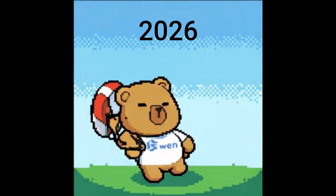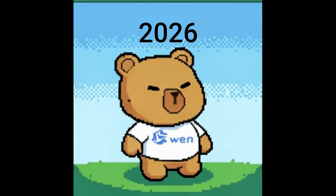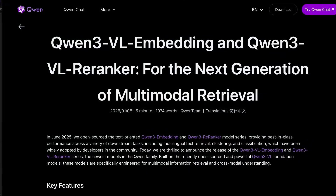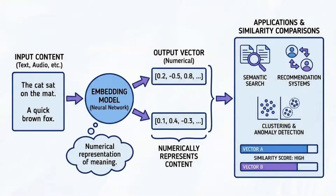The first models from Qwen for 2026 have dropped — these are the Qwen 3 VL embedding models. The cool thing about these is that they are multimodal embedding models, meaning they can process both text, images, and even videos.